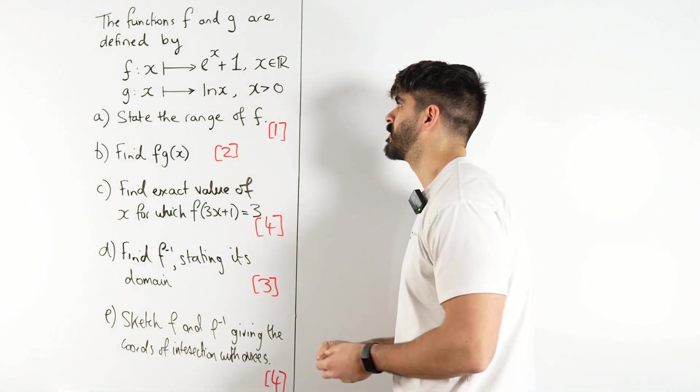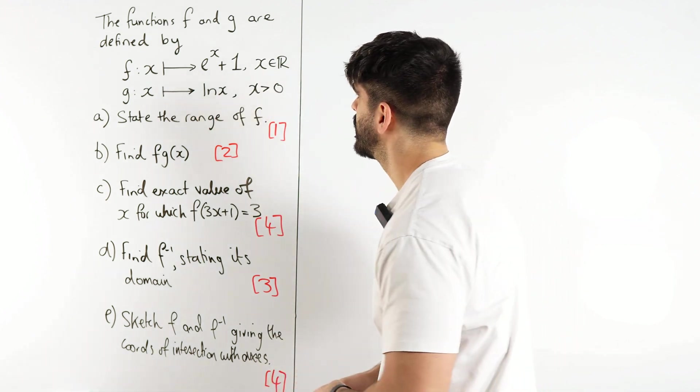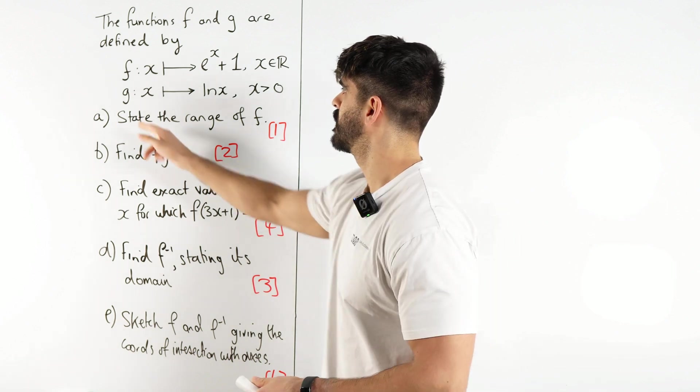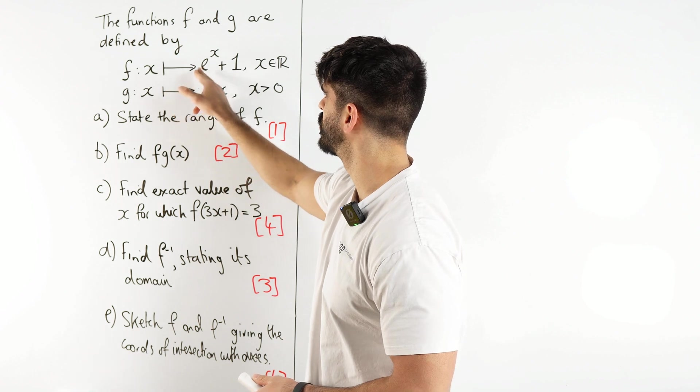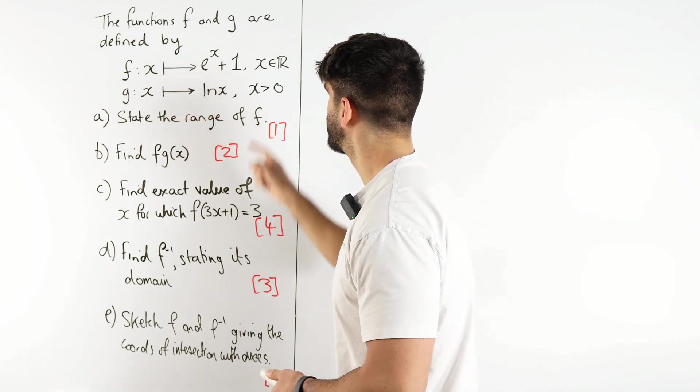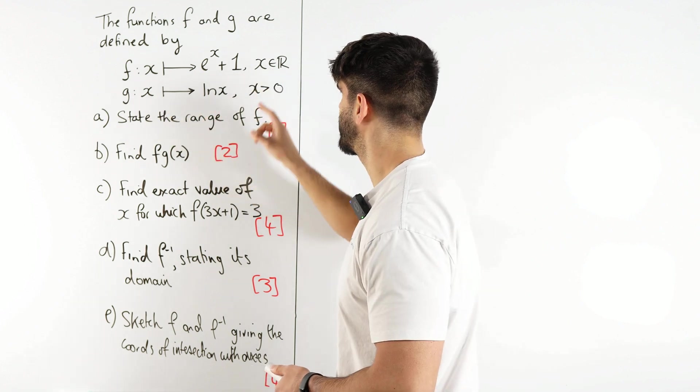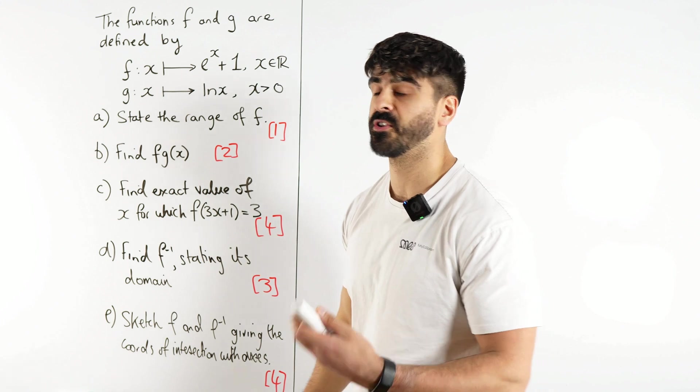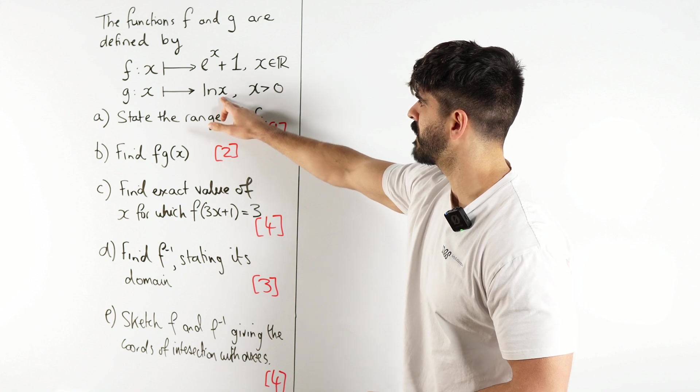The functions f and g are defined by f(x) = e^x + 1, where x is an element of the real numbers, and g(x) = ln(x), where x is greater than zero. That makes sense because ln(x) is only defined for positive x values.